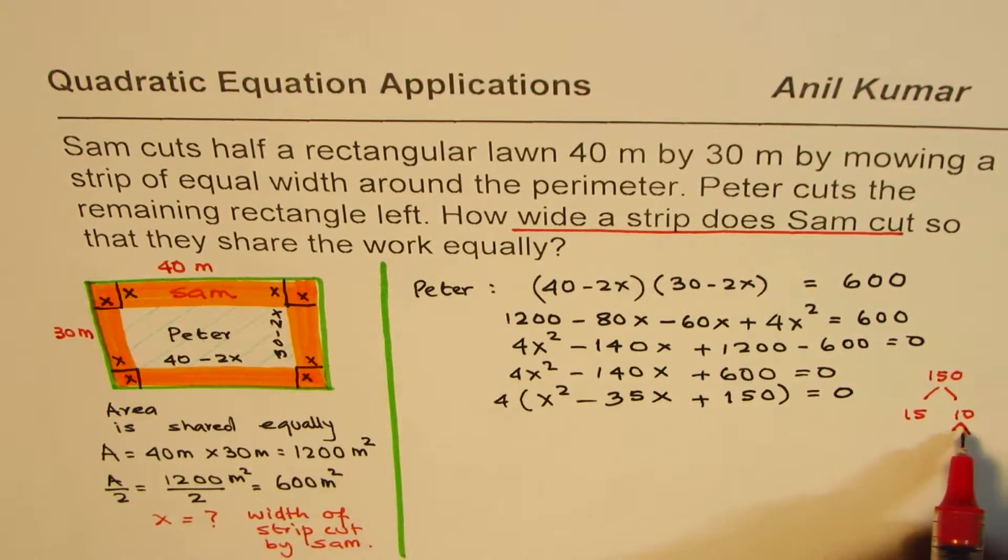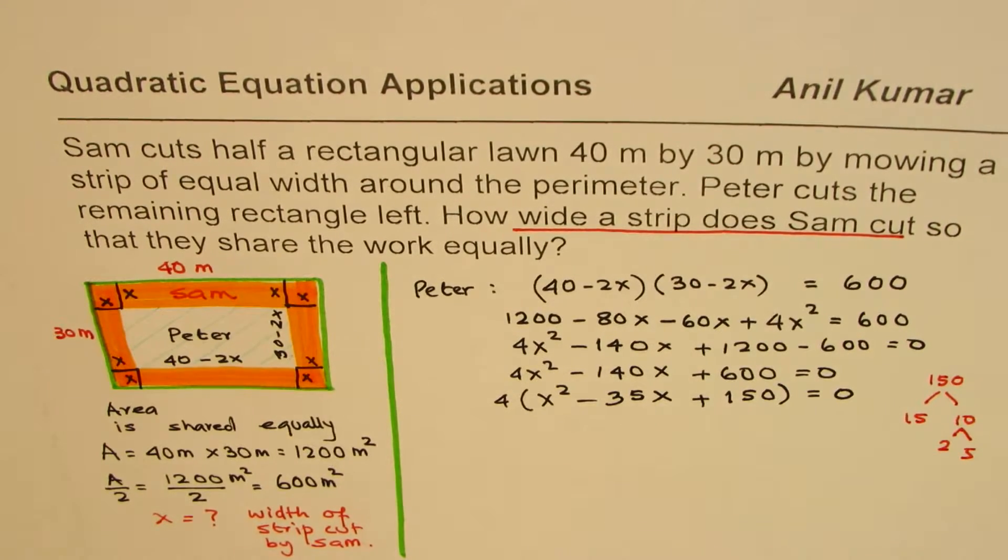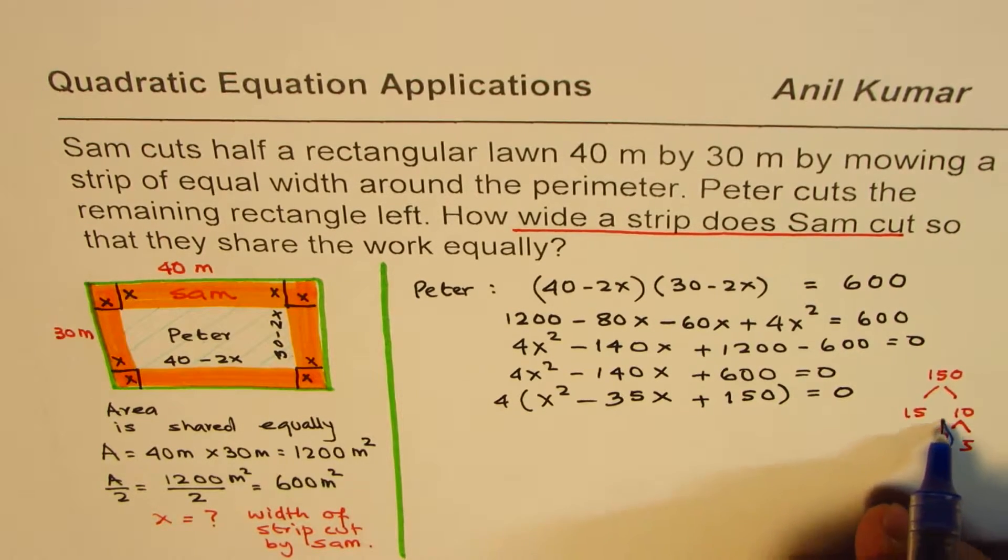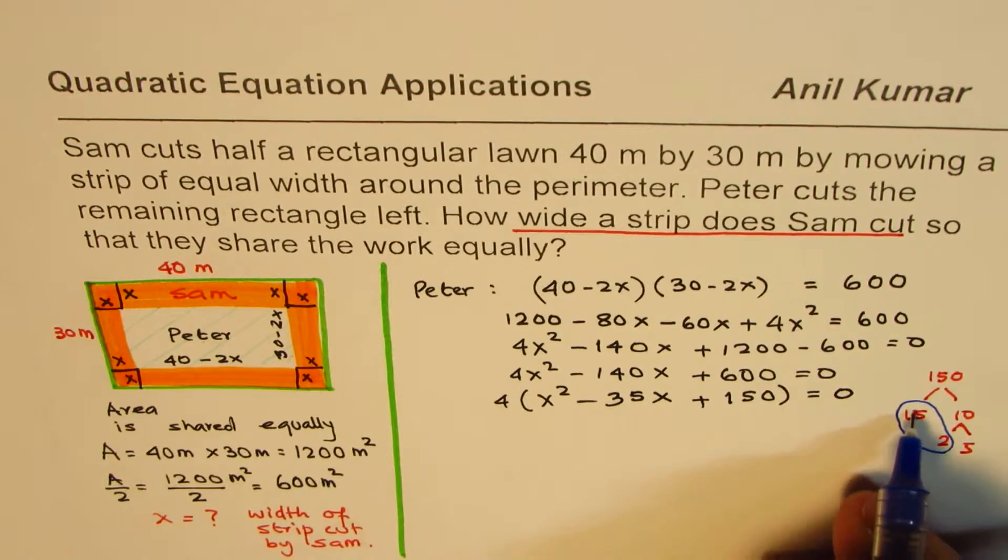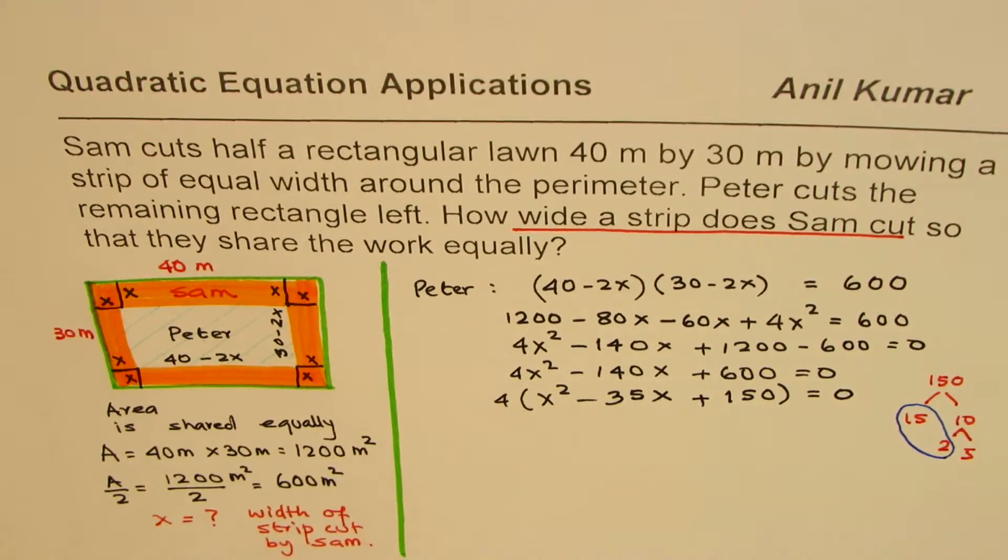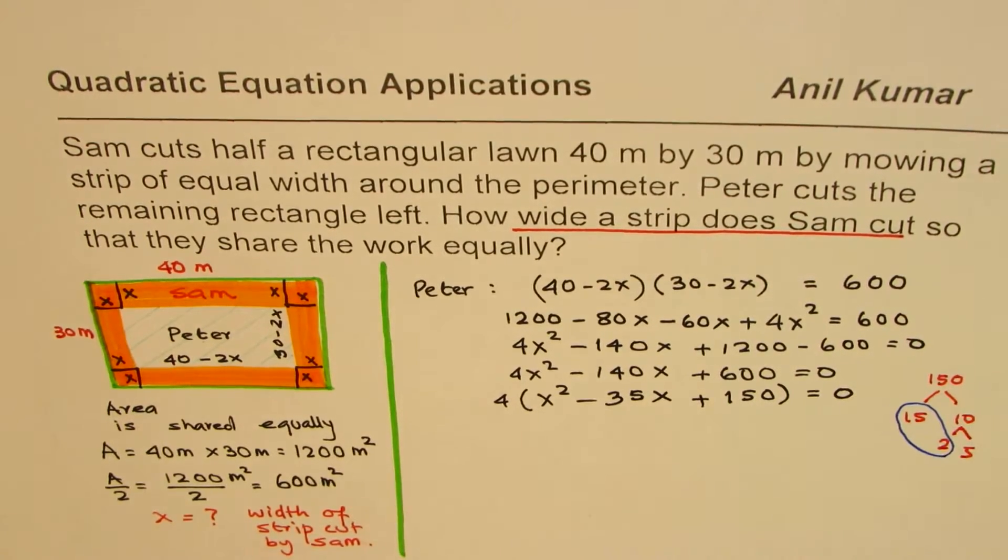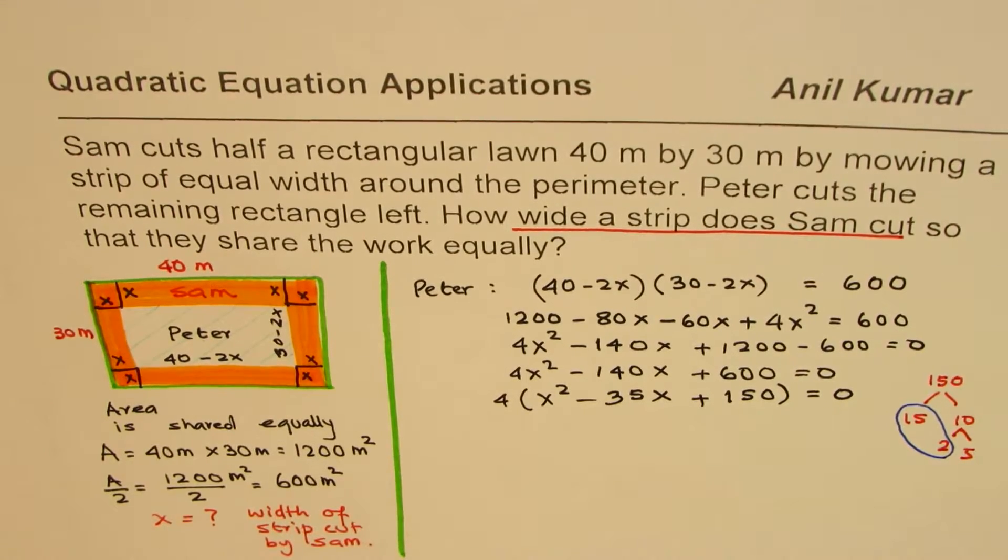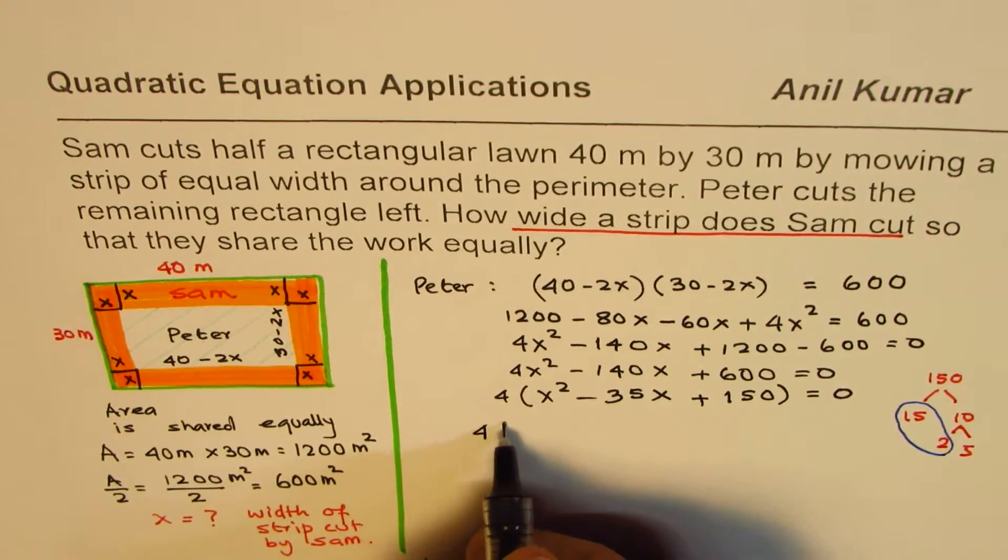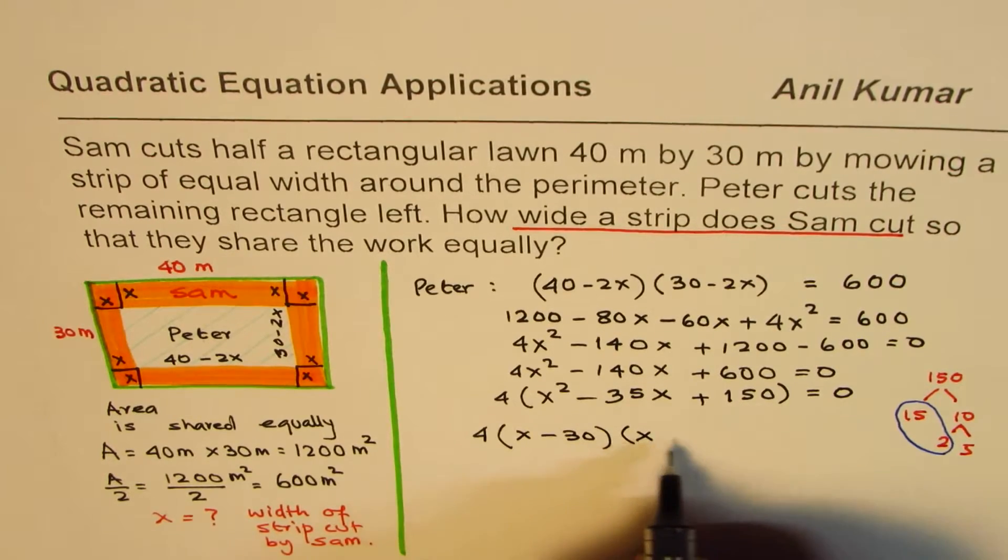What we can do is further factor this. Let's say 2 and 5. If I combine these two factors, then we get 30 and 5, which will give you 150, and their sum will be minus 35. Since we need minus, we'll keep them negative. I hope you understood this technique of prime factorization.